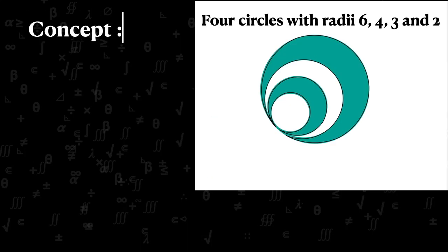Here the concept is area of a circle equals pi r squared.